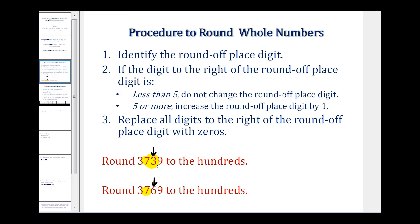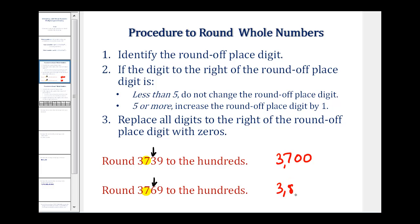For this first example, the three tells us to round down. So we leave the seven and replace the three and the nine with zeros — giving us 3,700 rounded to the nearest hundreds. In the second example, the six tells us to round up, so we increase the seven by one, giving us 3,800.